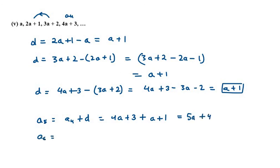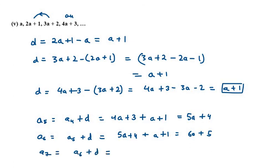A6 will be A5 plus D. A5 is 5a+4, so adding D gives 6a+5. A7 will be A6 plus D. A6 is 6a+5 and D is a+1, giving 7a+6. This is your answer for the fifth part. Thank you for watching this video. Please like, share and subscribe to my channel. Thank you.